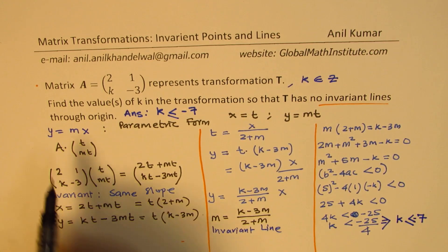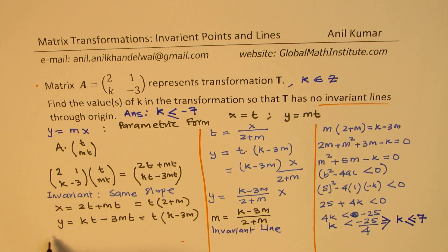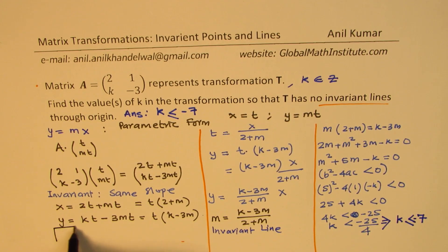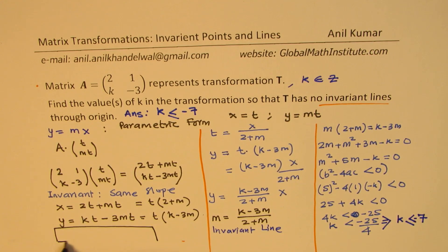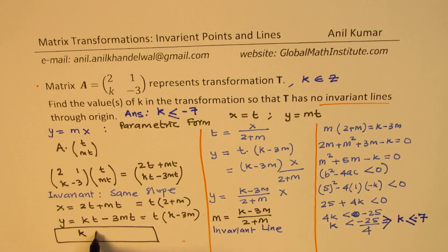So that becomes the solution in the given case. Perfect. So for no invariant lines, solution here is that the value of k is less than or equal to minus 7. Perfect. So that is how we are going to solve this particular question. I hope that makes sense.